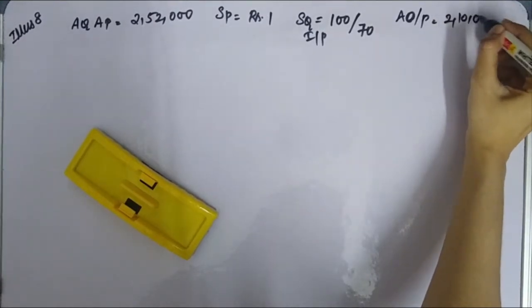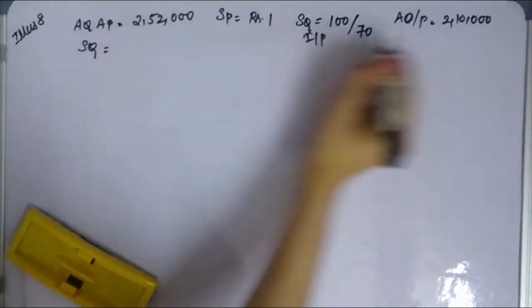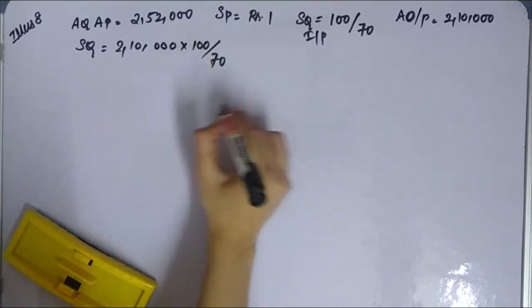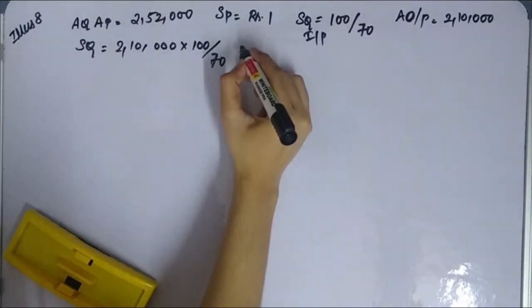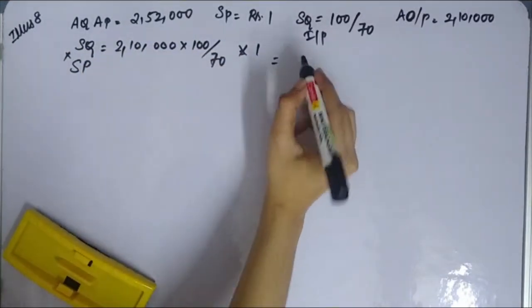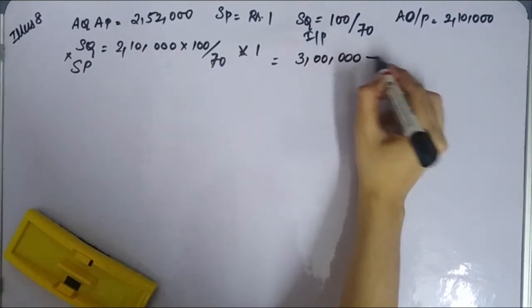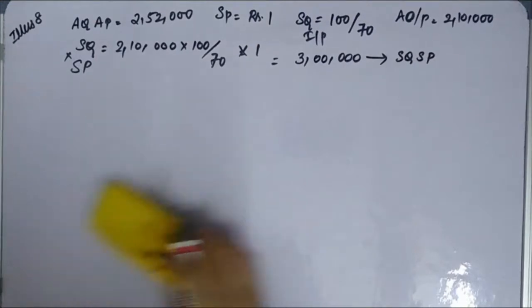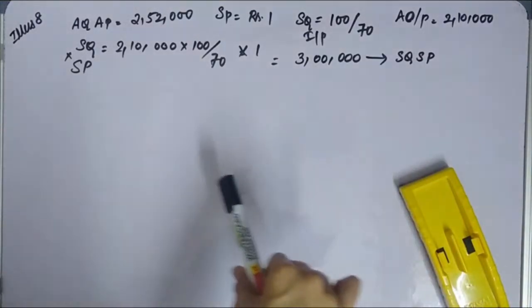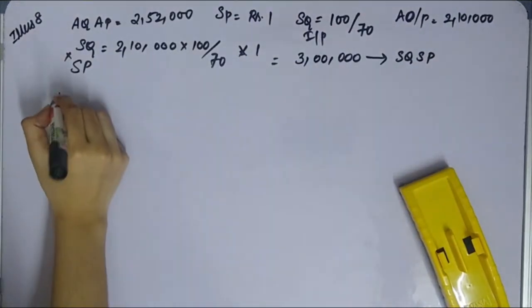2,10,000 kgs. So standard quantity is equal to your actual output 2,10,000 into 100 divided by 70, into 100 rupees. 100 rupees is nothing but your standard price. So this is your multiply. This is your standard quantity. Now we have to calculate material usage variance first.